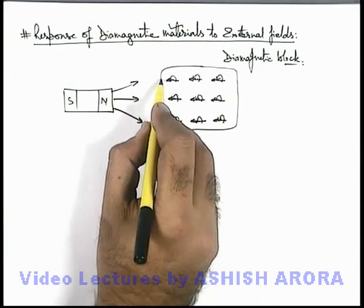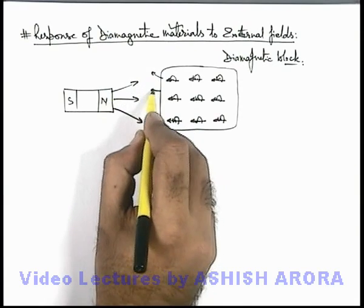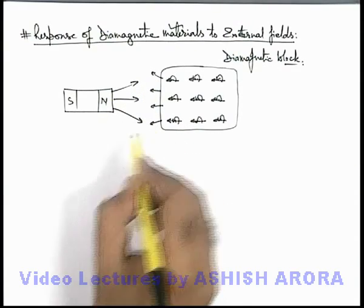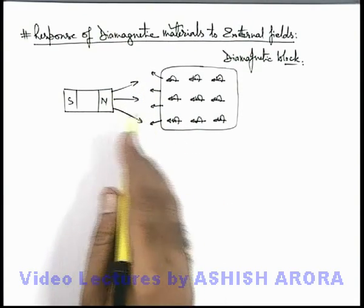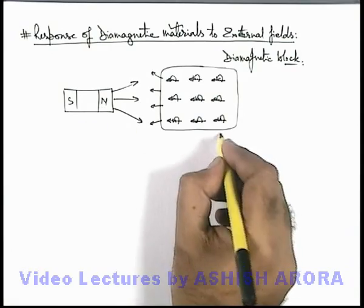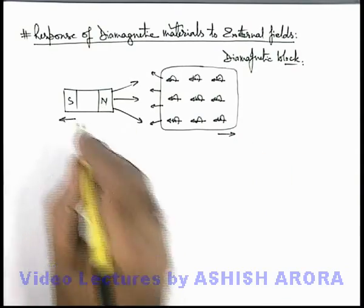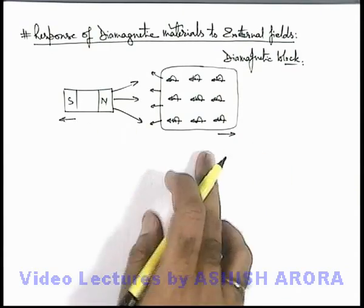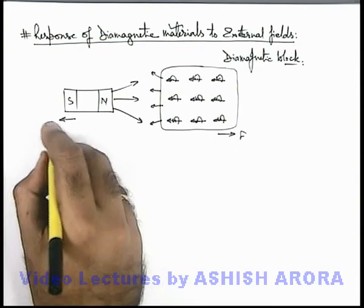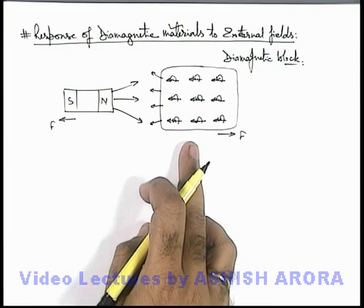So this produces its own magnetic field in the direction opposite to the external field, so this block will repel the magnet, and the magnet will experience a repulsive force due to the induced magnetic dipole in the block.